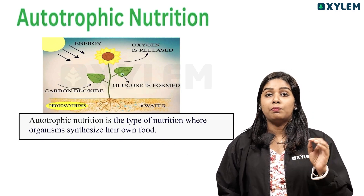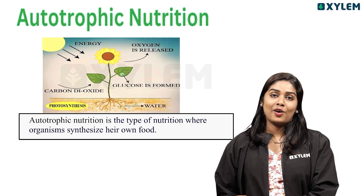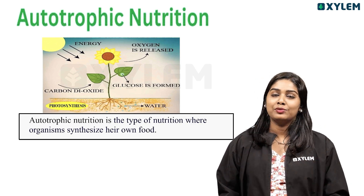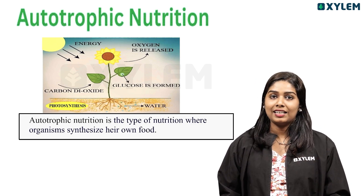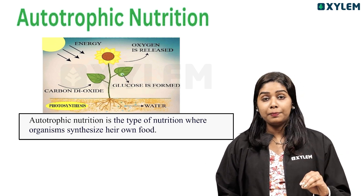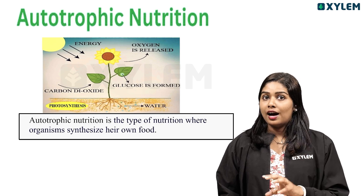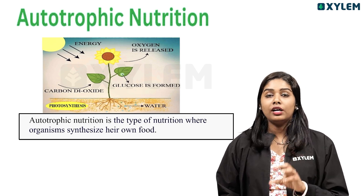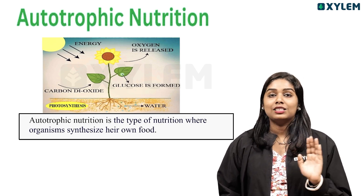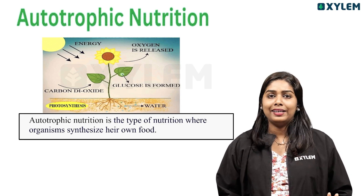The process by which green plants synthesize their own food is known as photosynthesis. In future classes, you can learn how photosynthesis works. Green plants carry out photosynthesis and prepare their own food and nutrients. That is what is meant by autotrophic nutrition.